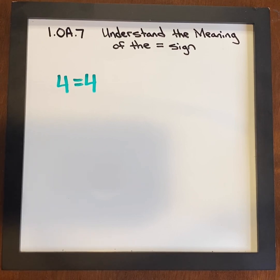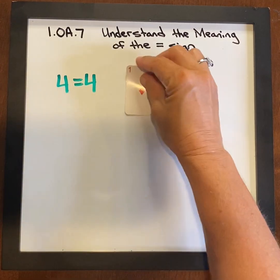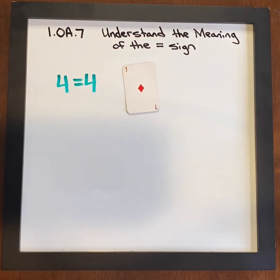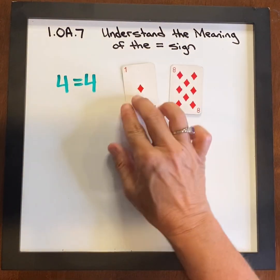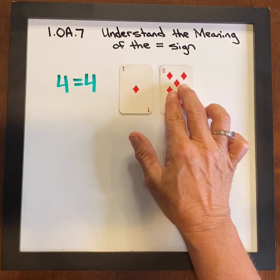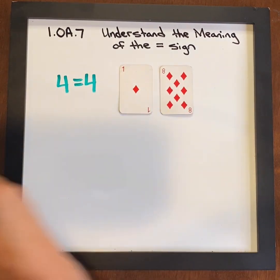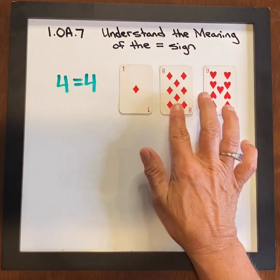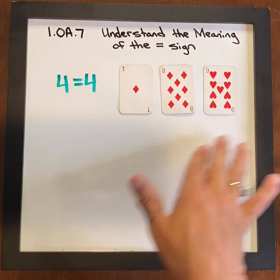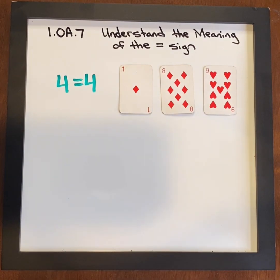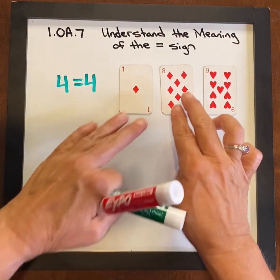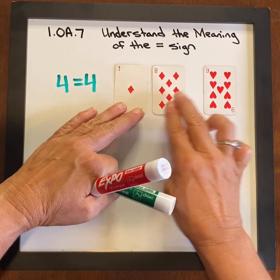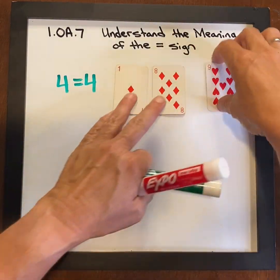So we want to continue with this: is this equation true? Turn this into an equation — is this true? So if I have a 1, an 8, and a 9, is there a way I could make a sentence that's true? 1 plus 8 does equal 9.